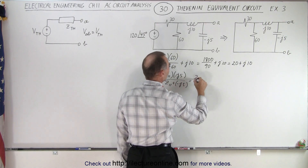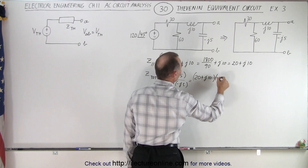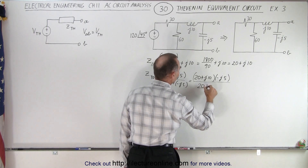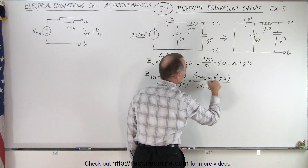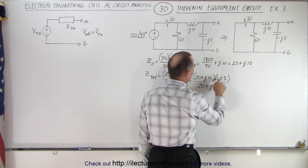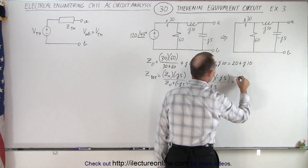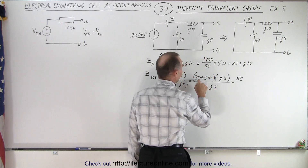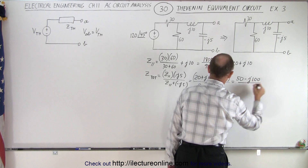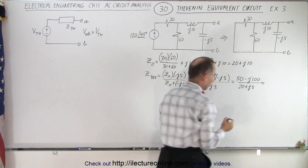So this equals (20 + j10) multiplied times minus j5, divided by the sum of those two, which is 20 + j5 — because minus j10 plus minus j5 gives plus j5. When we multiply the numerator, j times j is negative one, so we get 50, and 20 times minus j5 is minus j100, all divided by 20 + j5.